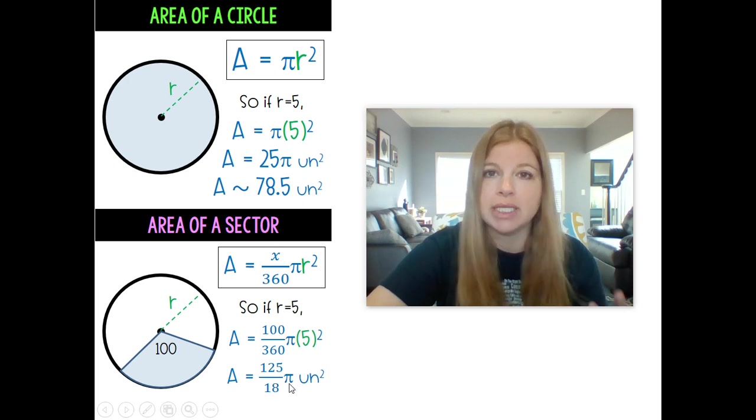And then if I really needed a decimal answer it would be 21.8 units squared. So the area of the entire circle is 78.5. The area of just this portion of that circle, like a big chunk of pie, is 21.8.